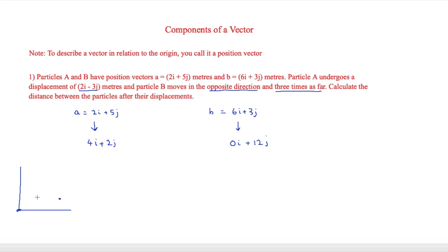And then the other one is 0i plus 12j. So it's going to be at the origin and then plus up 12. So that will maybe be around here, right at the top.